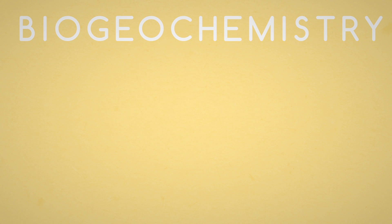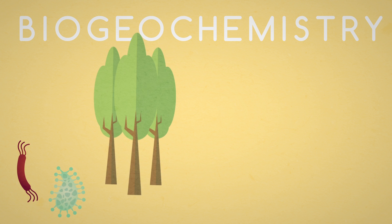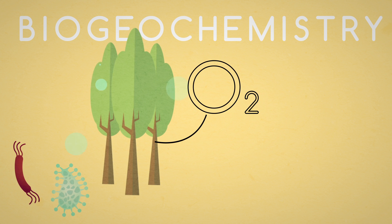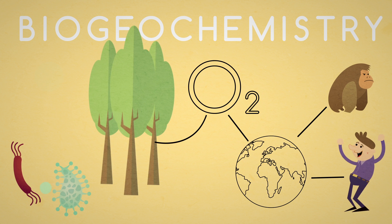For example, from the beginning of life, microorganisms and more recently plants have produced oxygen through a process called photosynthesis, allowing life for most living organisms, including us.